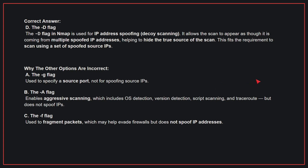While the other options are incorrect: A — the -g flag. This is used to specify a source port, not for spoofing source IPs. B — the -A flag. This enables aggressive scanning, which includes OS detection, version detection, script scanning, and traceroute, but does not spoof IPs. C — the -f flag. This is used to fragment packets, which may help evade firewalls, but does not spoof IP addresses. Therefore, the correct answer is D.